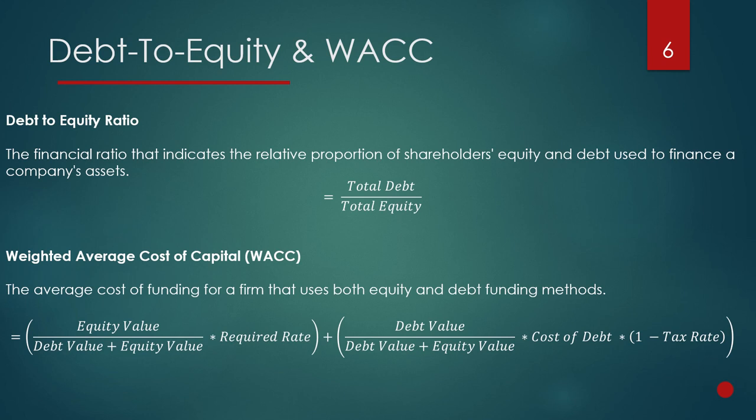The weighted average cost of capital is the total cost of funding for the firm if they're using both equity funding and debt funding. If the firm wants to be optimally funded, it will ensure the WACC is at its lowest level, which means that the cost of funding is at its lowest. The WACC is calculated by calculating the cost of equity and the cost of debt and adding these together.